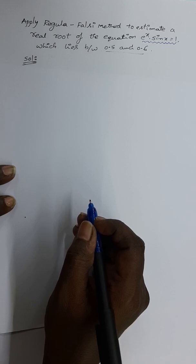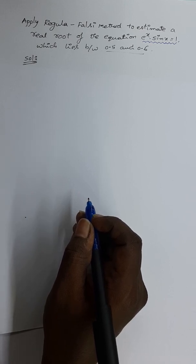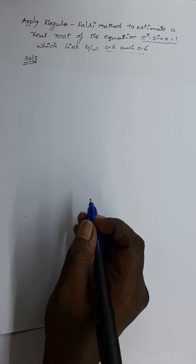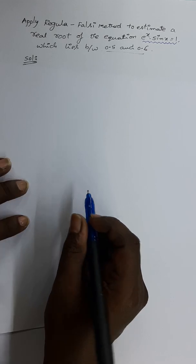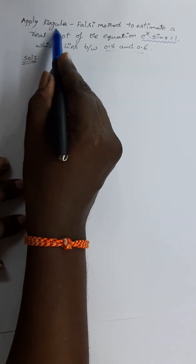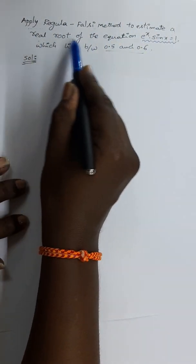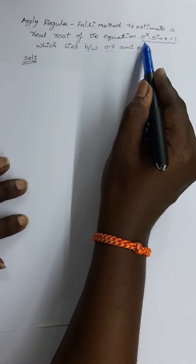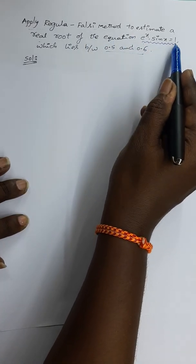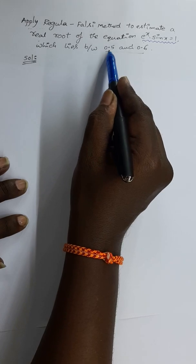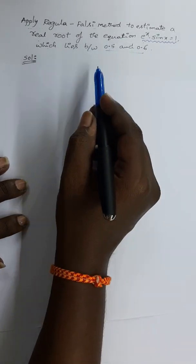Hi everyone, welcome back to our channel. In this video, I will give another example on the Regula-Falsi method. See the statement of the given problem: Apply the Regula-Falsi method to estimate a real root of the equation e^x · sin(x) = 1, which lies between 0.5 and 0.6.